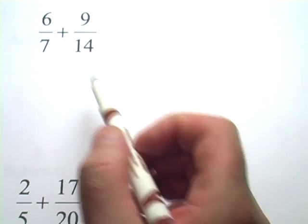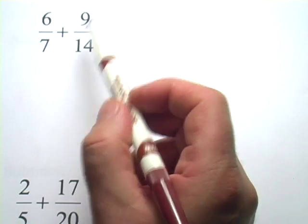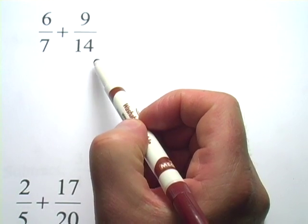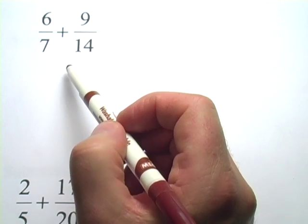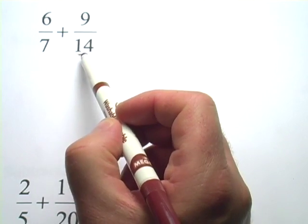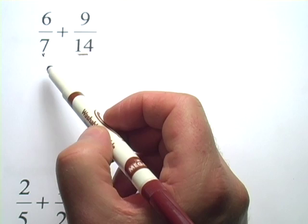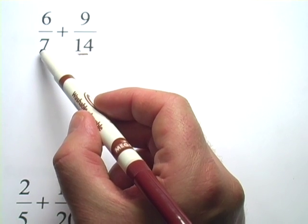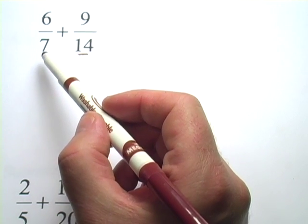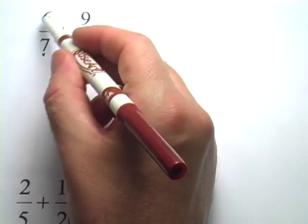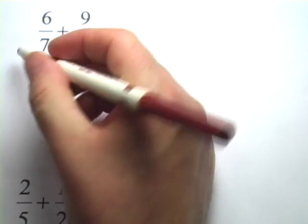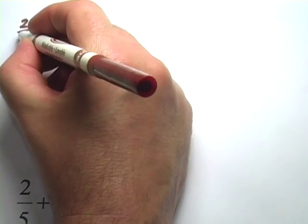Let me show you how this works. So here we have six sevenths plus nine fourteenths. I want these to both have the same denominator. I think I'm going to go for the fourteenths because I know, just looking at this, if I multiplied this by two, the seven down here, I'd have fourteen. So what I have to do is multiply this by the number one, but I'm going to choose the form two over two.